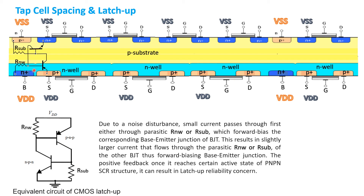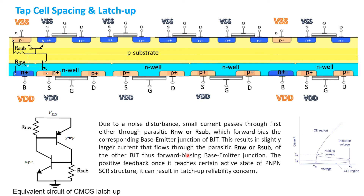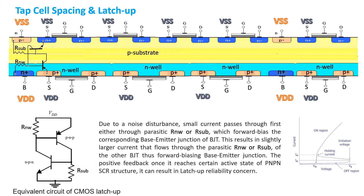This is shown through the PNP-NPN thyristor-like I-V waveform, depicting current versus voltage across the structure. After a certain voltage the device switches from off to on — this is the latch-up condition where the SCR is in the on state. The holding current is the key parameter, and it largely depends on R_sub and R_NW. In the other condition, we consider a transistor that is far away from the substrate tap.